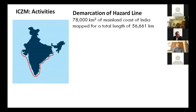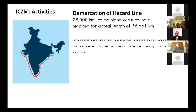The first major activity was the demarcation of the hazard line, where 78,000 square kilometers of mainland coast of India was mapped using aerial photography. These are highly sensitive images shared only by three institutions: the defense ministry, the Survey of India, and NCSM. We have a dedicated mini data center to keep the data intact and safe. Based on these aerial photographs, we covered 56,661 kilometers of the entire Indian coastline.